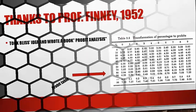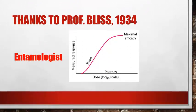I will show you in the next video how to use this table to convert percent values — percent mortality or percent cell proliferation inhibition — to probit. Also, thanks to Professor Bliss, who in 1934, as an entomologist, performed research to find the effectiveness of pesticides to control insects feeding on grape leaves. After the experiment, he plotted the response of insects to various concentrations of pesticides.